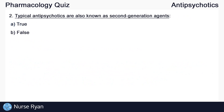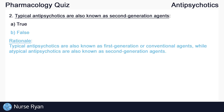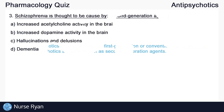Question number two: typical antipsychotics are also known as second generation agents. The answer here is B, false. Typical antipsychotics are also known as first generation or conventional agents, while atypical antipsychotics are also known as second generation agents.